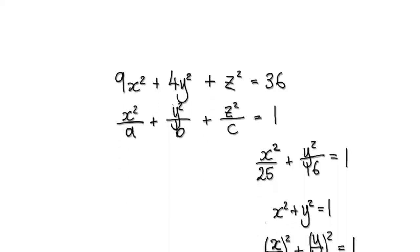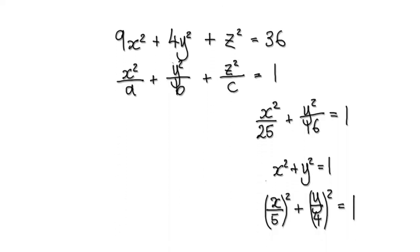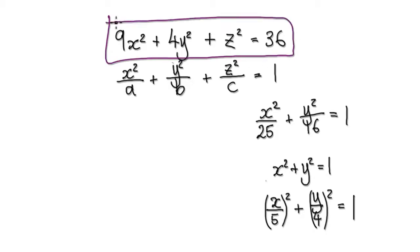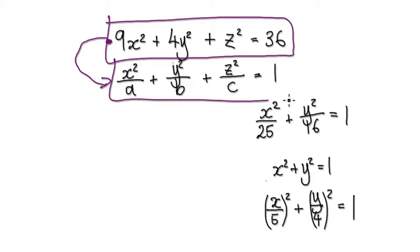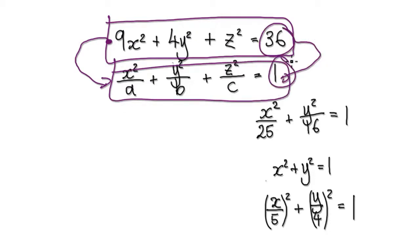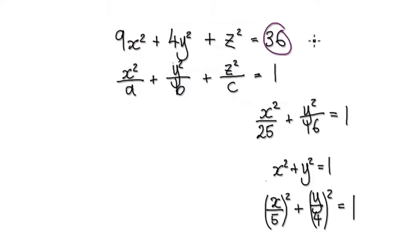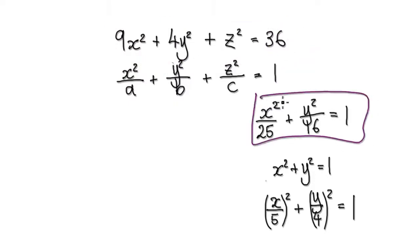In this video, we are going to sketch this equation in 3D space. The first step is to turn this equation into our standard form, meaning turn this 36 into a 1. The reason why we want to do that is because when it equals 1, it's easy to understand what's going on.